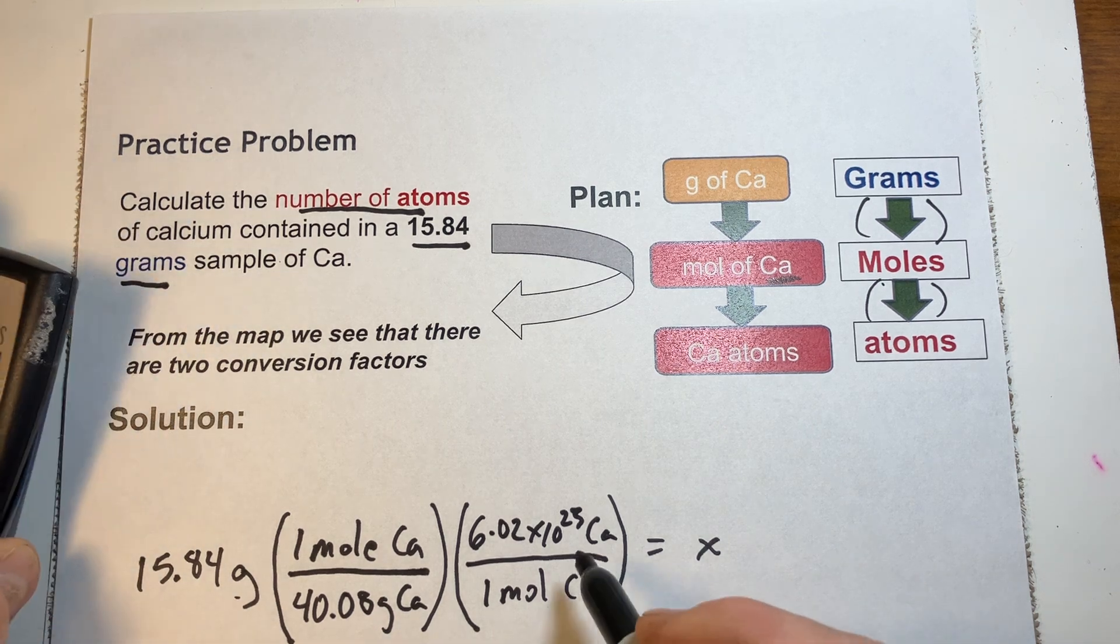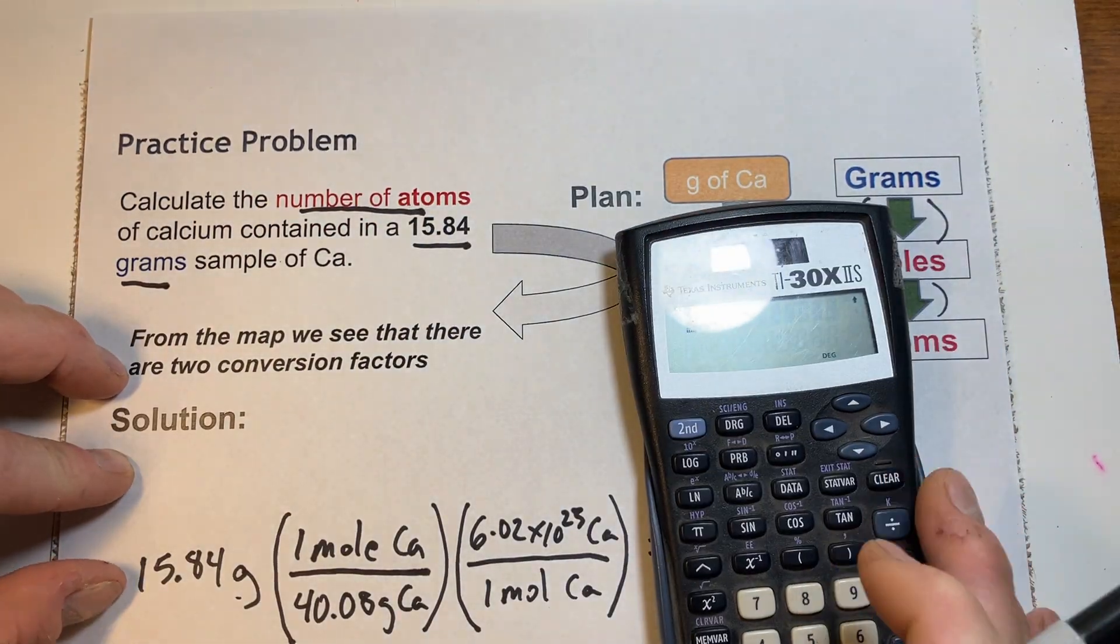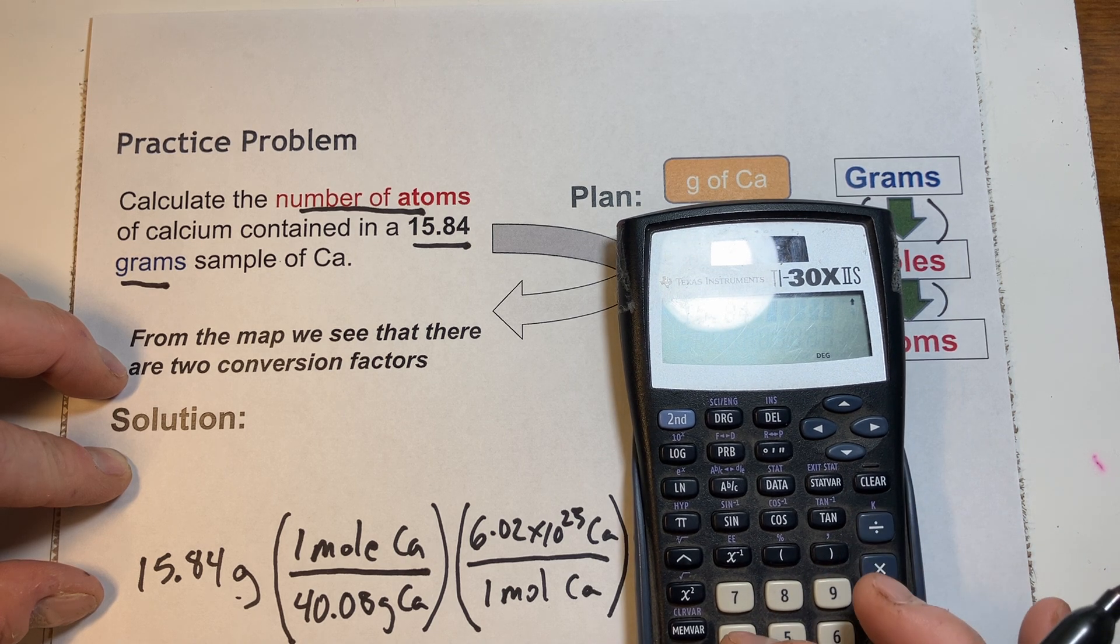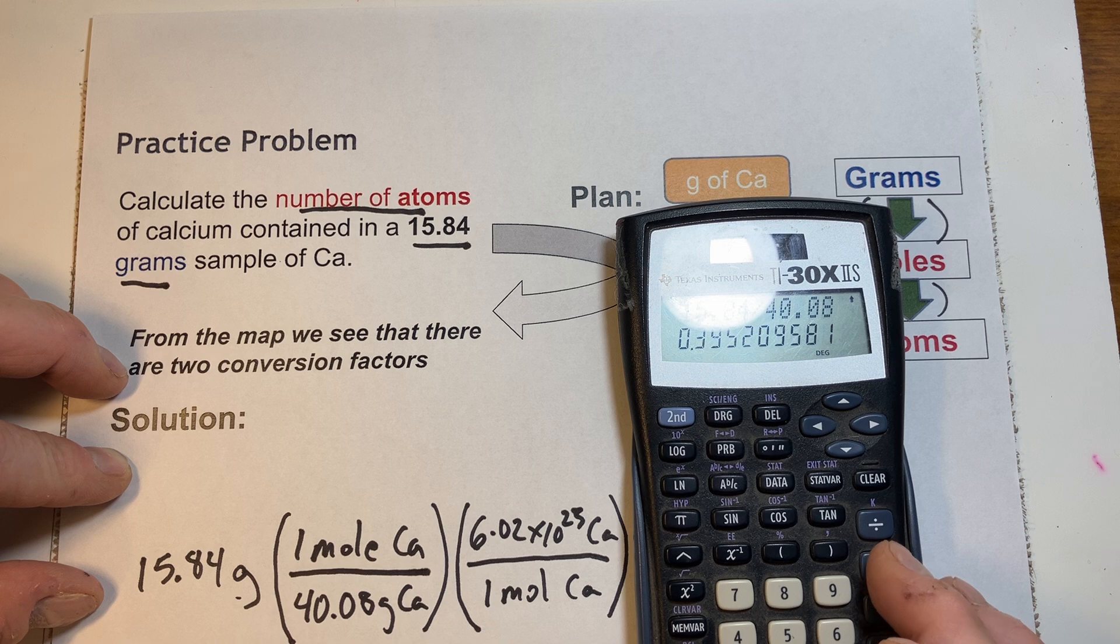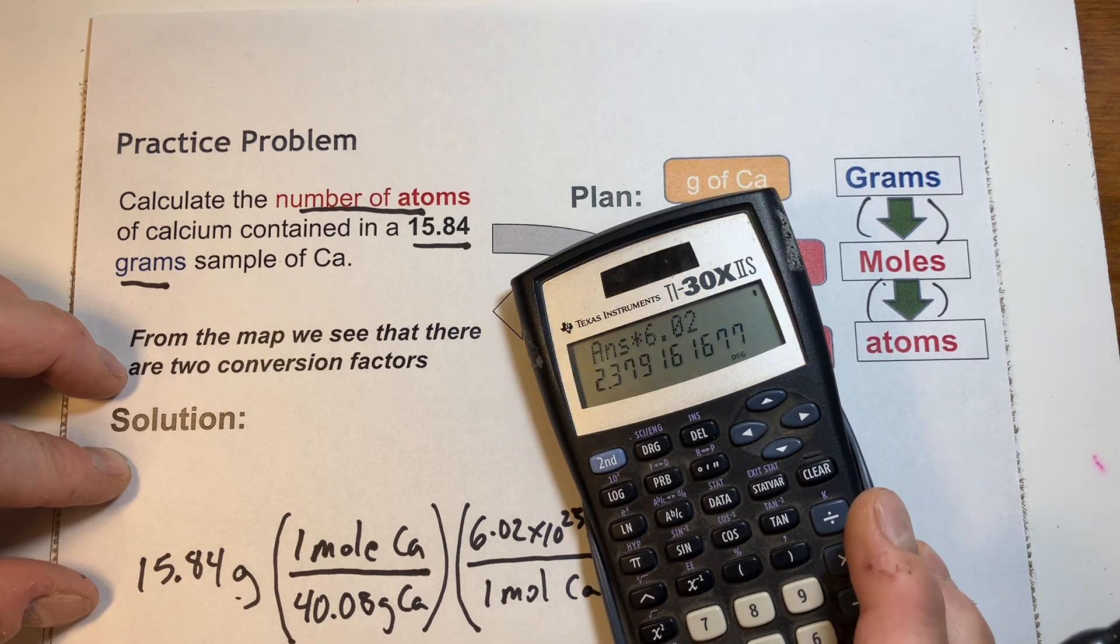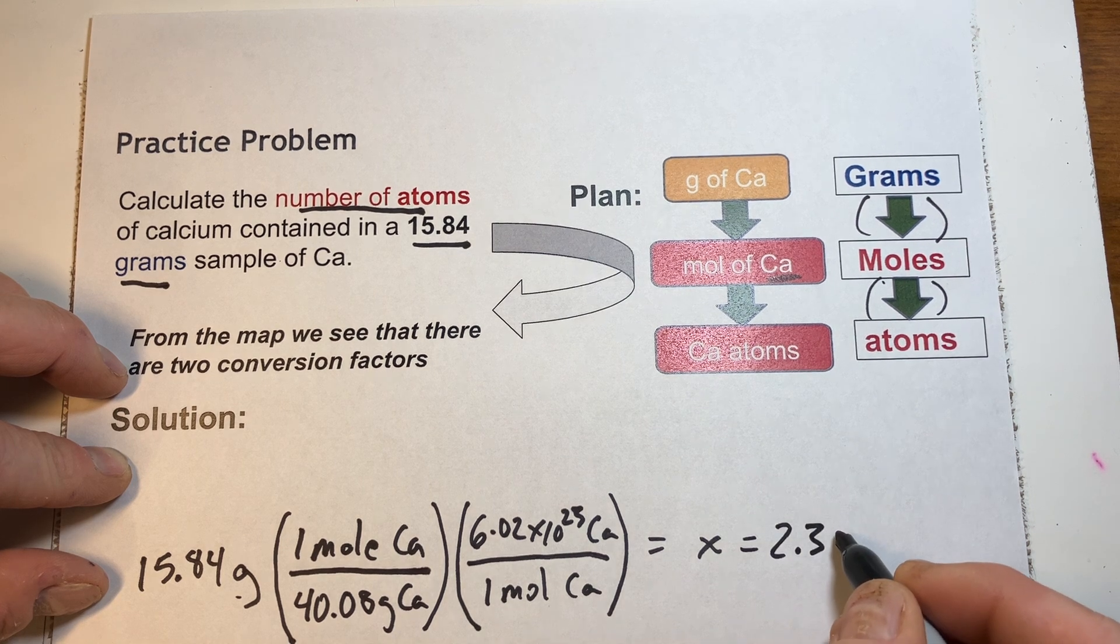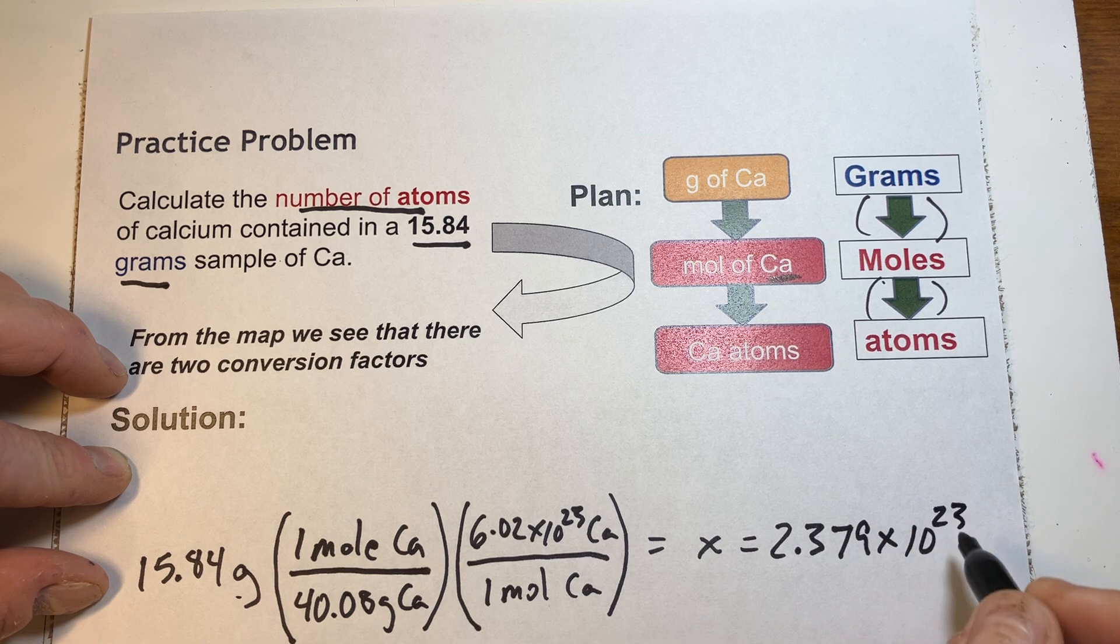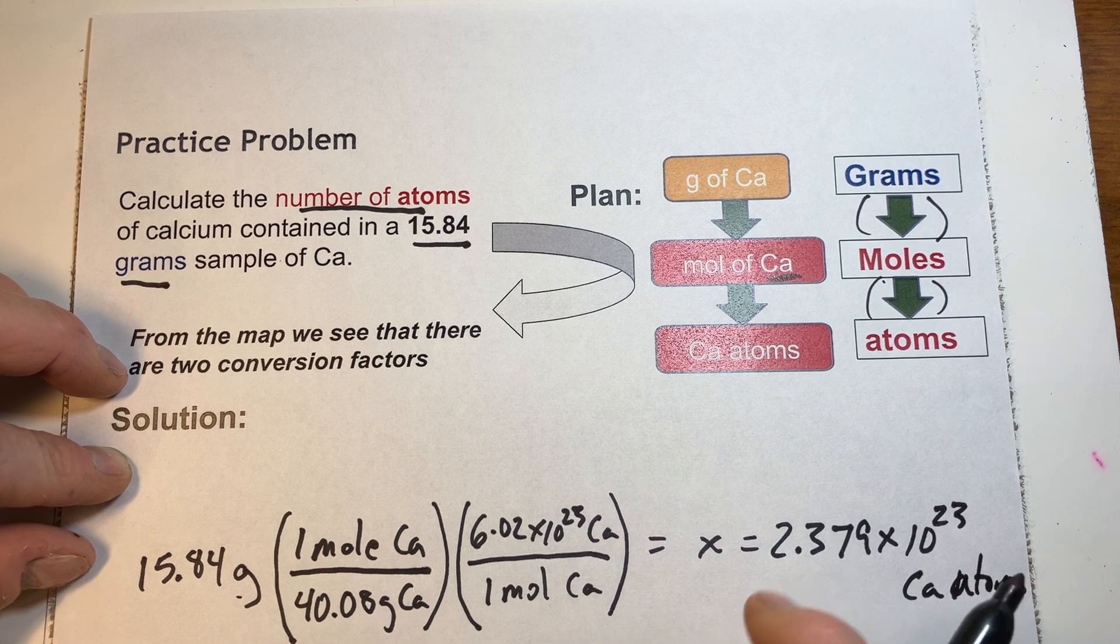Now, I'm ready to do the math. And we're going to again leave this term for the very end and put it on at the very end back on. So, I'm going to go just to the 15.84 divided by 40.08 and hit equals and then I'm going to times what we have as a product times 6.02 hit equals and I get 2.379 and then I just put it right back on 10 to the 23rd calcium atoms and we are done.